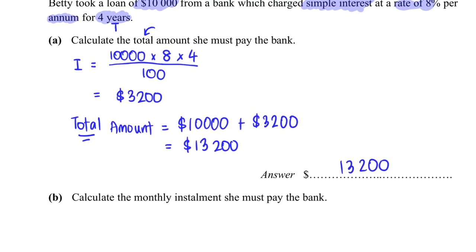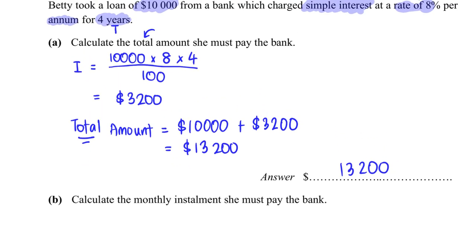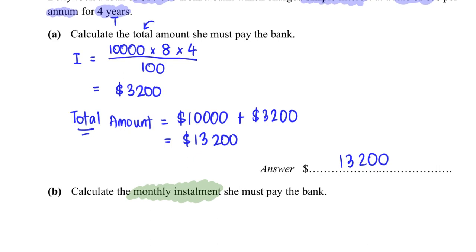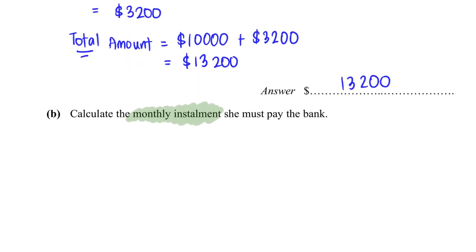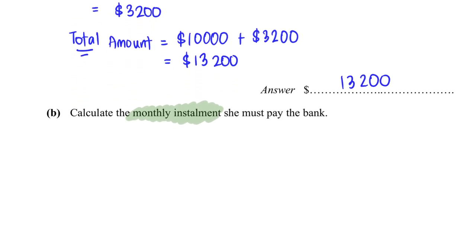For four years, should she decide to pay by monthly installment, we would then need to calculate each month how much she has to pay back. Now that we know the total amount is $13,200, the monthly installment would then be simply the total...